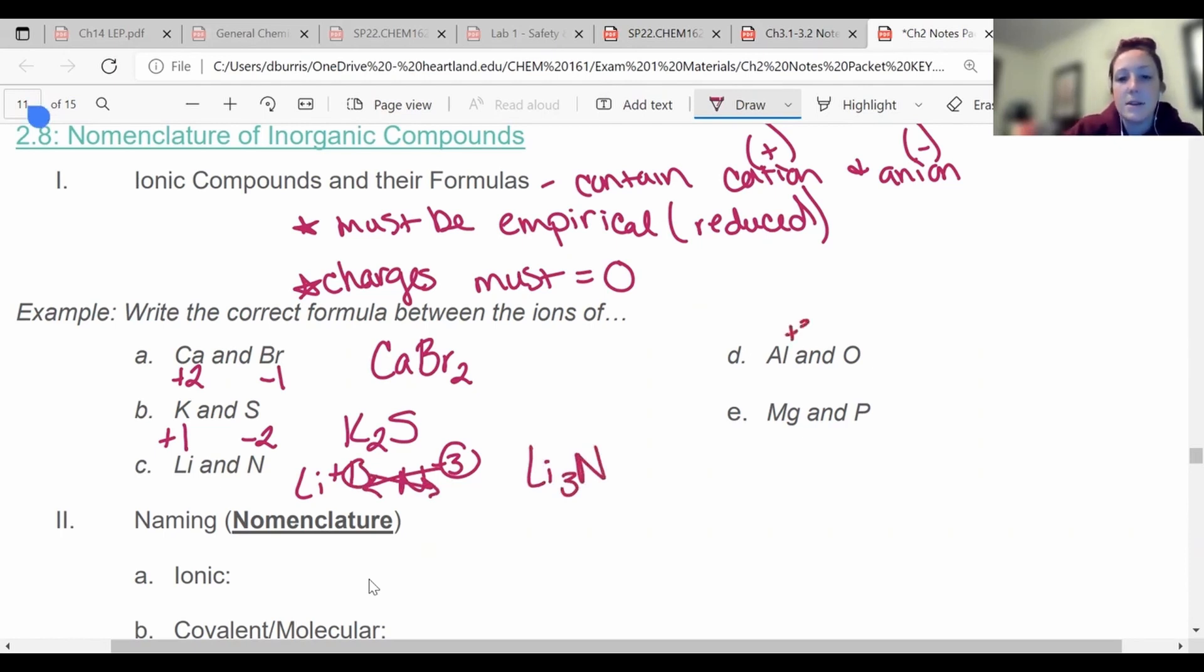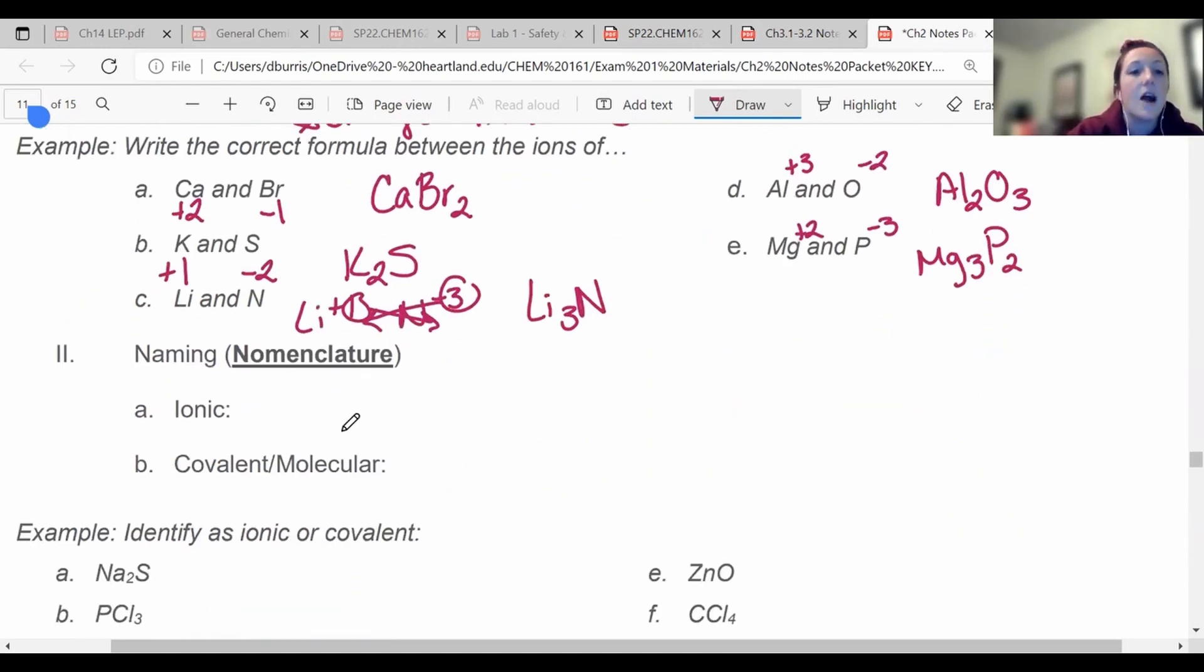I got aluminum is plus three, oxygen is minus two. If I do my crisscross, it'll be Al2O3. Magnesium plus two, phosphorus minus three. It's going to be Mg3P2. Simple as that. Now if they were reducible, you should reduce them. So if it was two and two, they should be reduced to ones, so on and so forth. All right, so that's how you write the formulas.